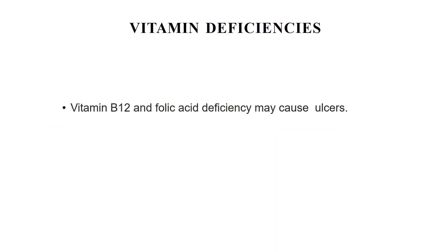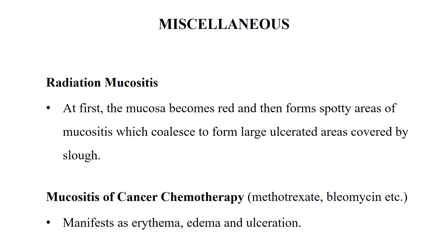Vitamins deficiency — especially vitamin B12 and folic acid — may present with oral ulcerations. Miscellaneous conditions include radiation mucositis, which follows radiation of the oral cavity or oropharynx for cancer. The mucosa first becomes red and then forms spotty areas of mucositis which coalesce to form large ulcerated areas covered by slough. Mucositis from cancer chemotherapy — especially drugs like methotrexate, 5-fluorouracil, and bleomycin — manifests as erythema, edema, and ulceration.